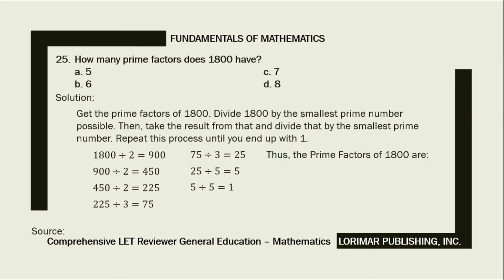Thus, the prime factors of 1,800 are 2, 2, 2, 3, 3, 5, 5. When we count the number of prime factors, we find that 1,800 has a total of 7 prime factors. The correct answer is letter C, 7.